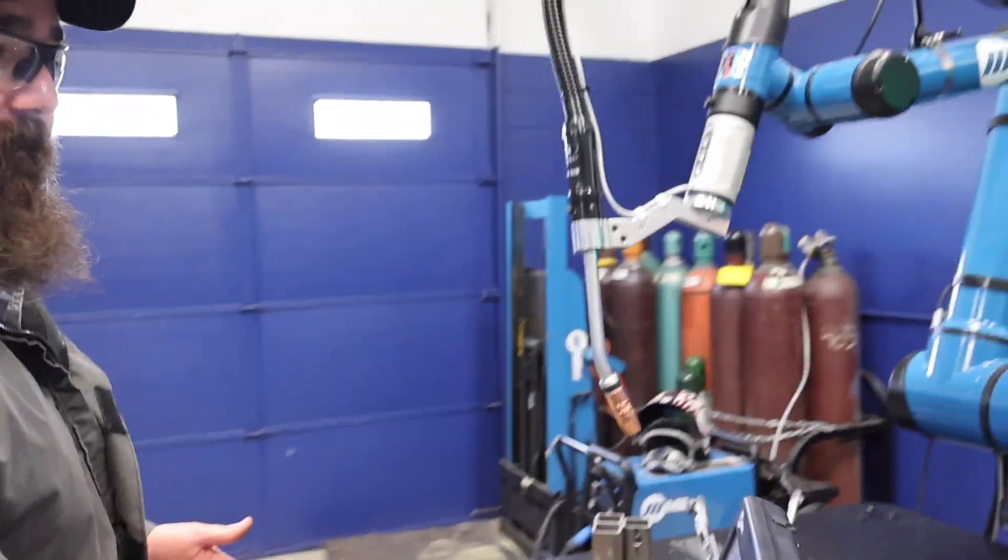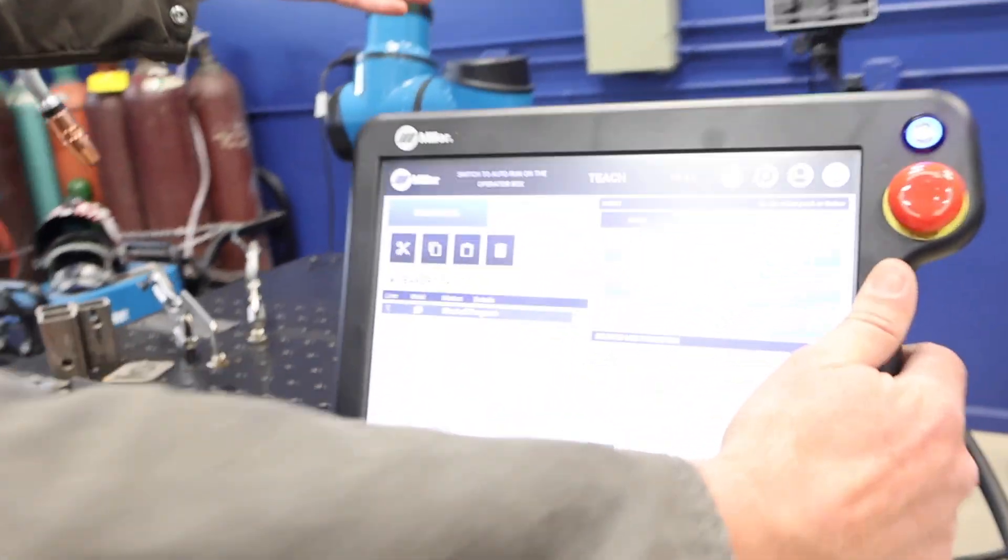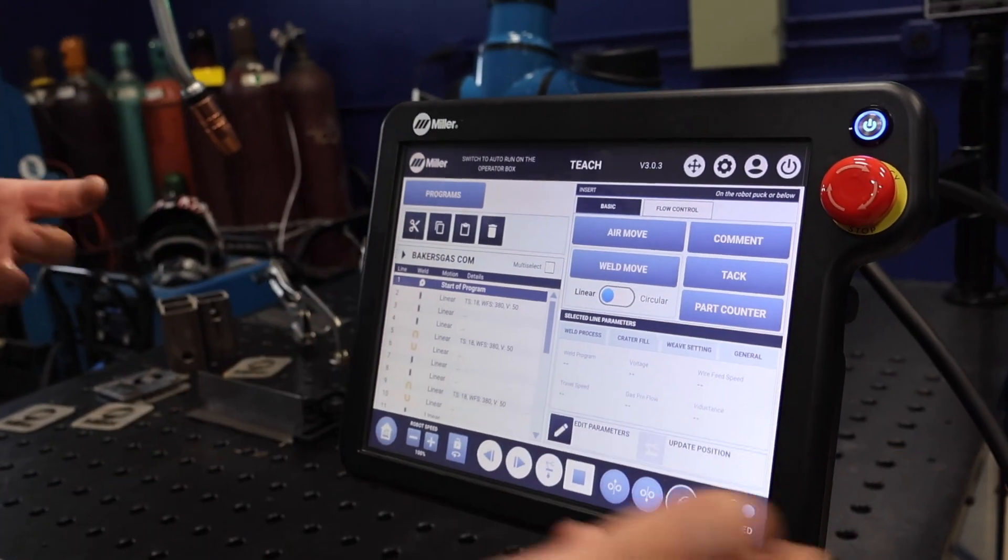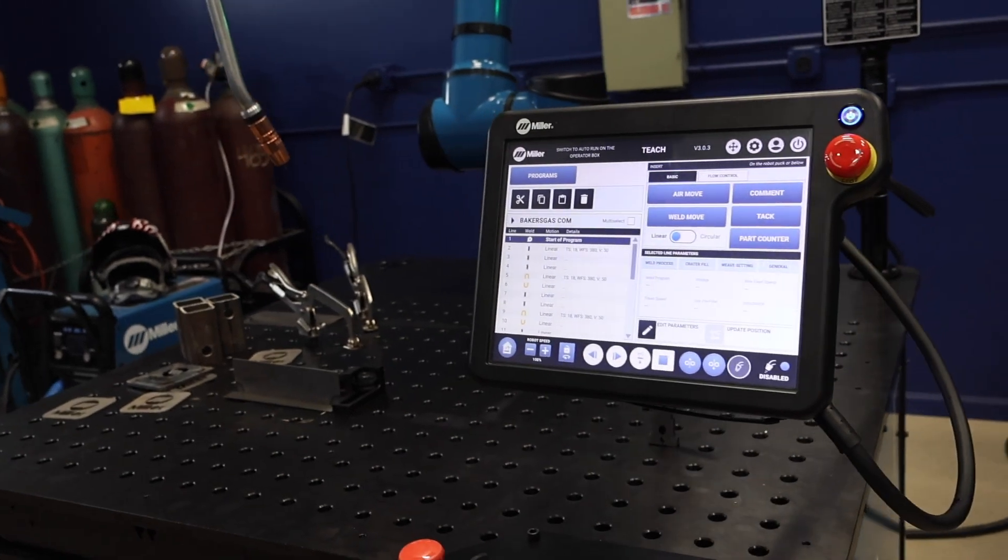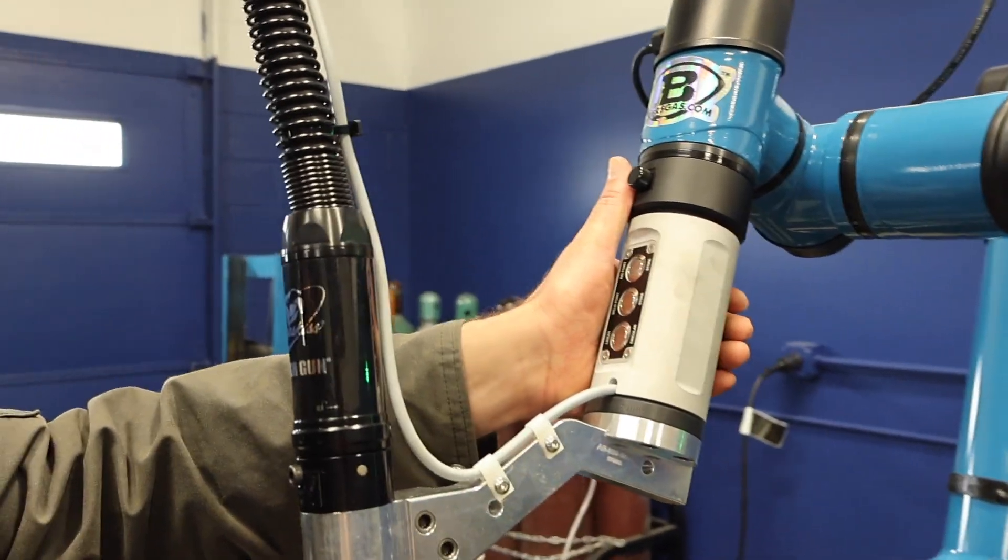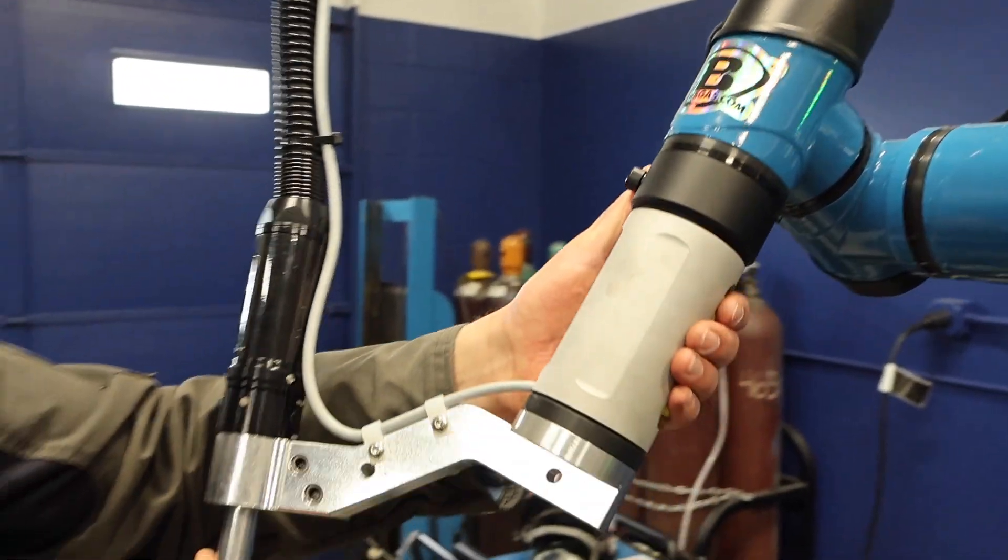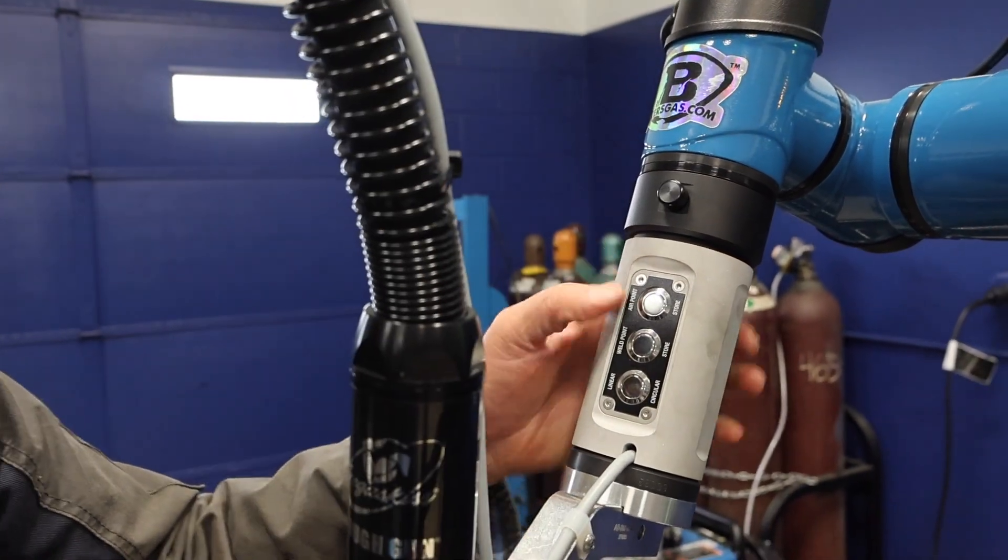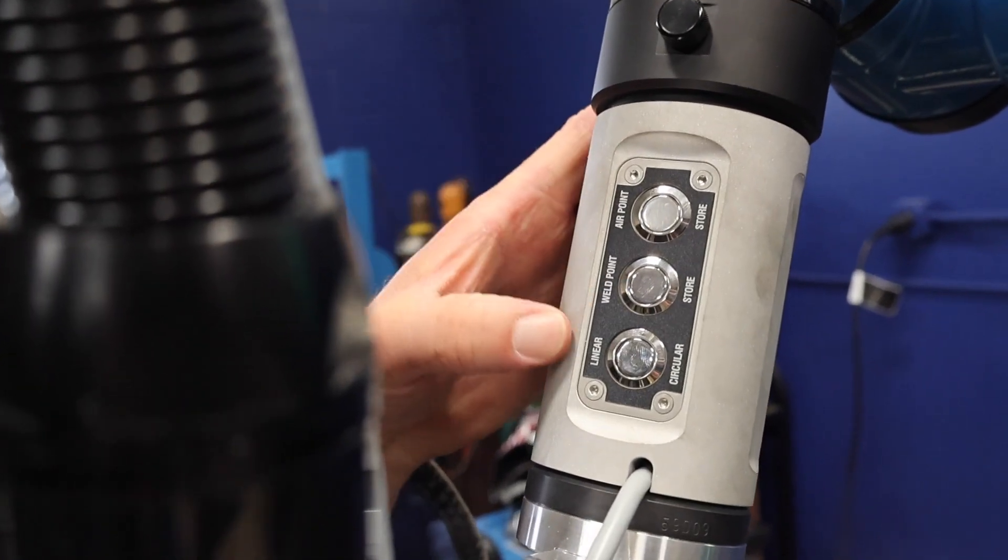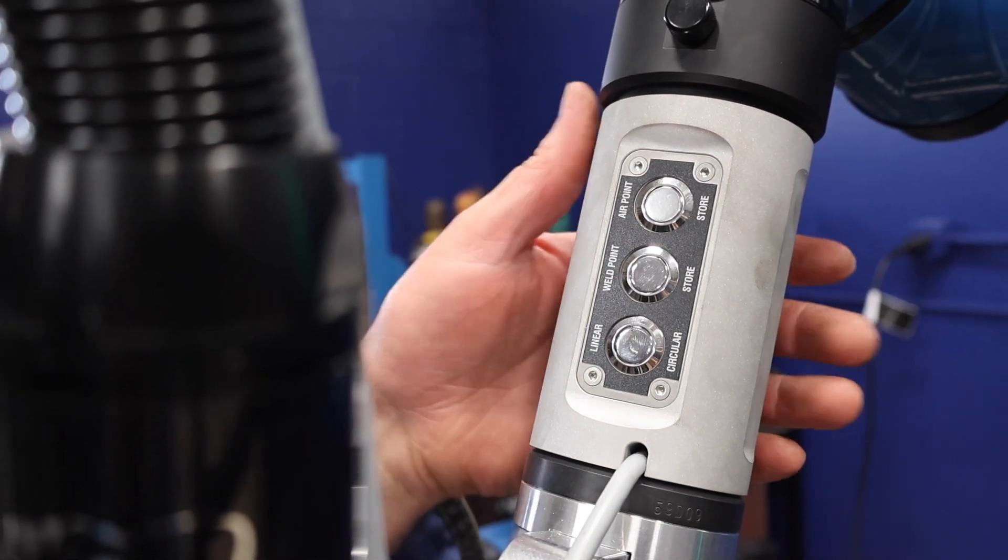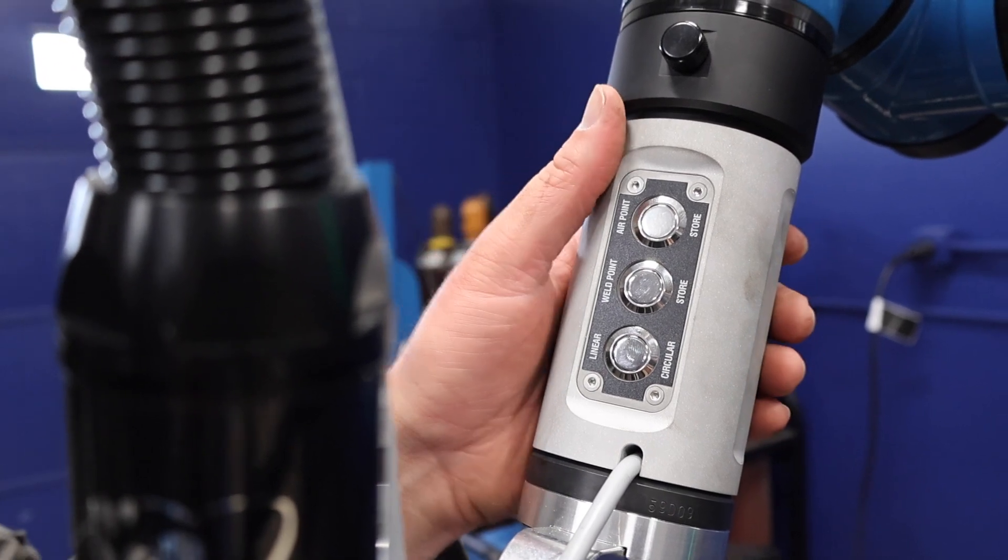Now to jump into the programming side of things, we have an attached screen here that is always on the table, mounted so you can't drop it or beat it up. It's pretty simple to use, very easy to program. You push the button on the backside to move it. Then to program, you got your air point program, your weld point, and then it goes linear or circular.